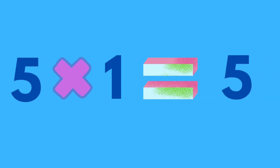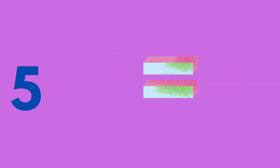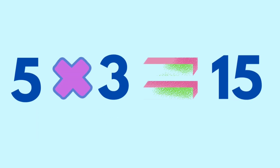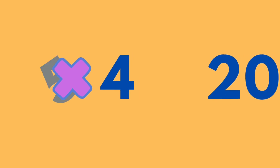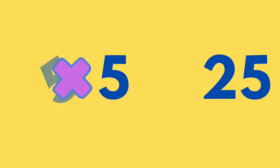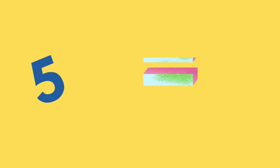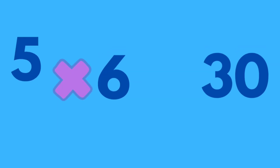5 times 1 is equal to 5. 5 times 2 is equal to 10. 5 times 3 is equal to 15. 5 times 4 is equal to 20. 5 times 5 is equal to 25. 5 times 6 is equal to 30.